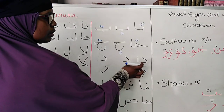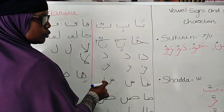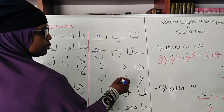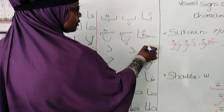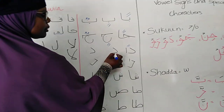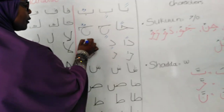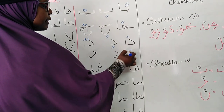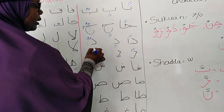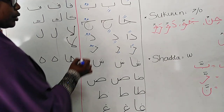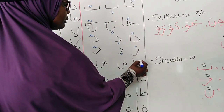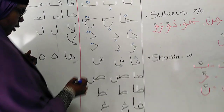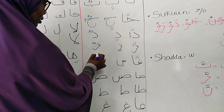Alif and ta are not going to join, and ra and alif are not going to join because they are non-joining letters. So: tan, tin, tun — ran, ran, rin, run — shan.